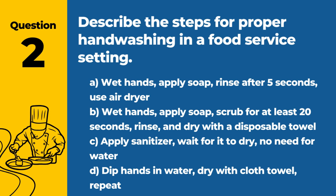Question 2. Describe the steps for proper hand washing in a food service setting. The answer is B: Wet hands, apply soap, scrub for at least 20 seconds, rinse and dry with a disposable towel. Proper hand washing technique is crucial in reducing the spread of foodborne pathogens.